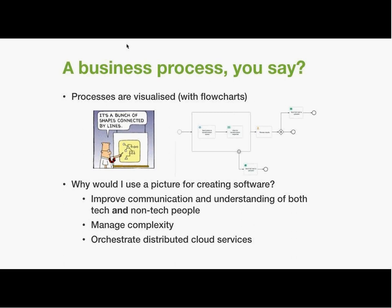And that's actually what Activiti does at a high level — you give it a diagram and it executes that. Why would you want to do this? One of the biggest benefits of business process management is that having this diagram gives you something really cool: improved communication between technical and non-technical people. We've all been in projects where business gives you a big chunk of documents — user analysis, requirements gathering — and in the end nobody's happy because they didn't know exactly what they were building.